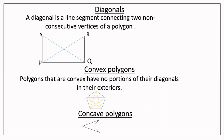Next are convex polygons and concave polygons. Polygons that are convex have no portions of their diagonals in their exteriors. In the pentagon shown, all diagonals are drawn inside only — no diagonals go outside — so this is a convex polygon. In a concave polygon, one diagonal can be drawn inside but another can also be drawn in the exterior, so that is a concave polygon.